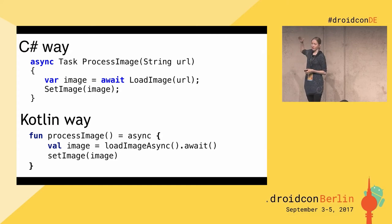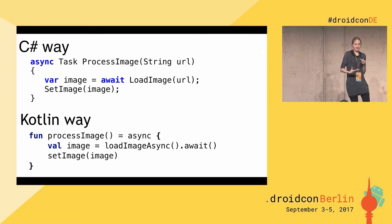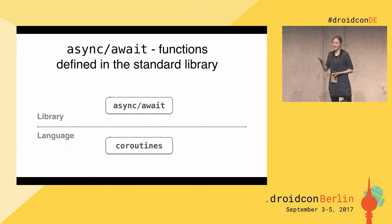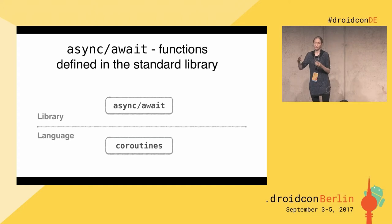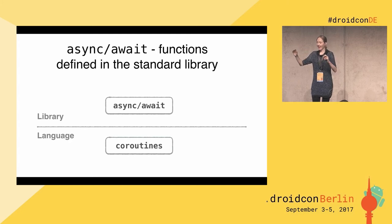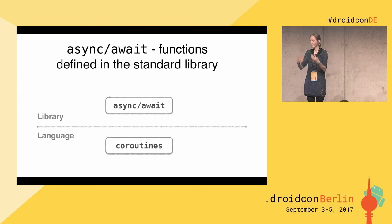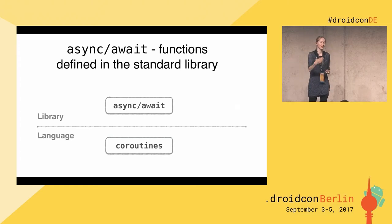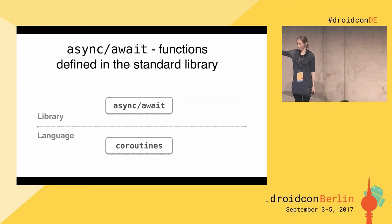The code looks very similar, so you can express the same ideas. But in Kotlin, it's not the feature async/await — it's the feature of coroutines. In Kotlin, we provide basic support for coroutines on the language level, and we can implement different features from different languages, like async/await, as a library. Async/await is a feature that proved to be useful in C# for quite a while. We know from other worlds that it works, and now we can use it in Kotlin, in our JVM world.